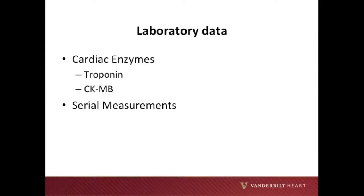Next, we will discuss the important laboratory data to evaluate in a patient with suspected ACS. The most important laboratory data to obtain are cardiac enzymes such as troponin and CKMB. Remember the importance of obtaining serial measurements, as cardiac enzymes will be expected to rise over time. Other laboratory data to evaluate for other causes of chest pain, such as severe anemia on hemoglobin, white blood cells, and infectious causes, may also be obtained.